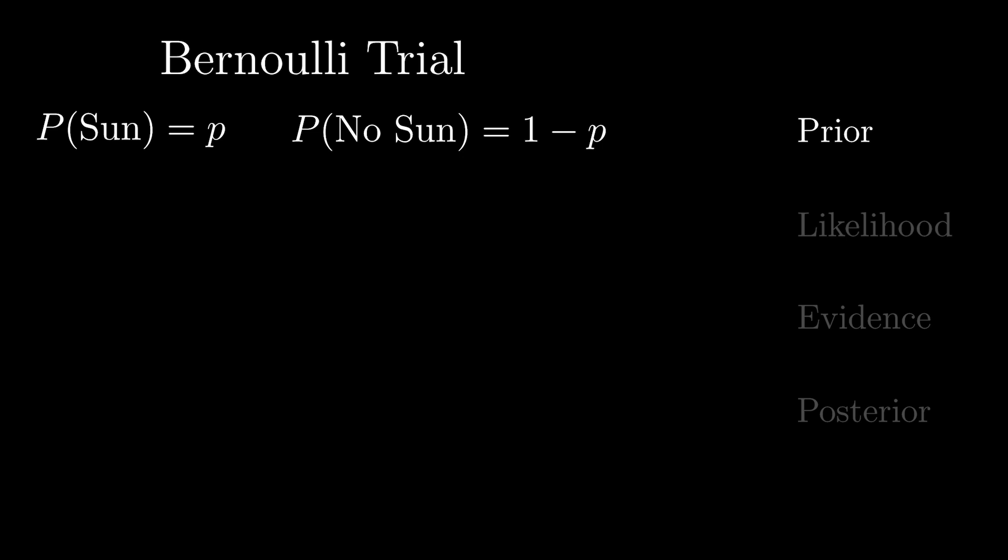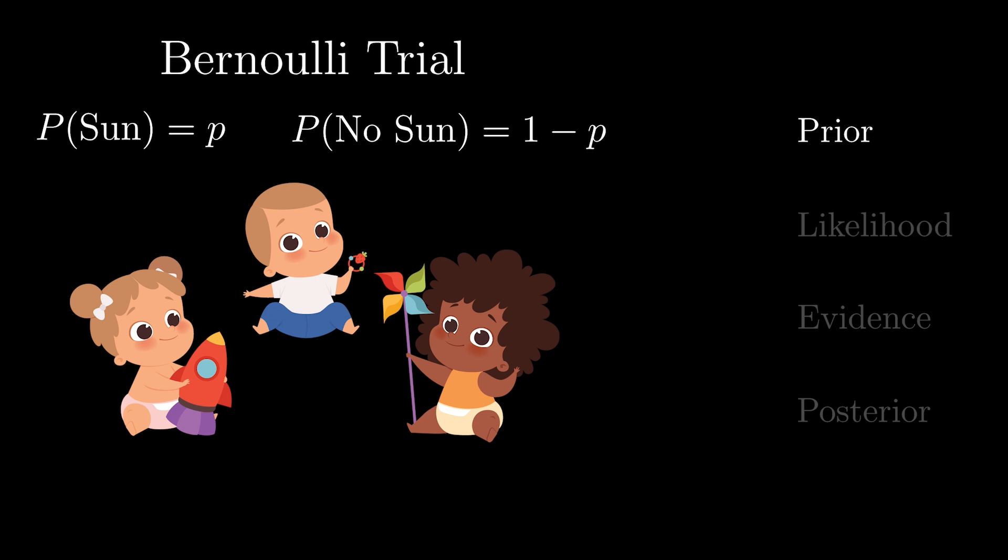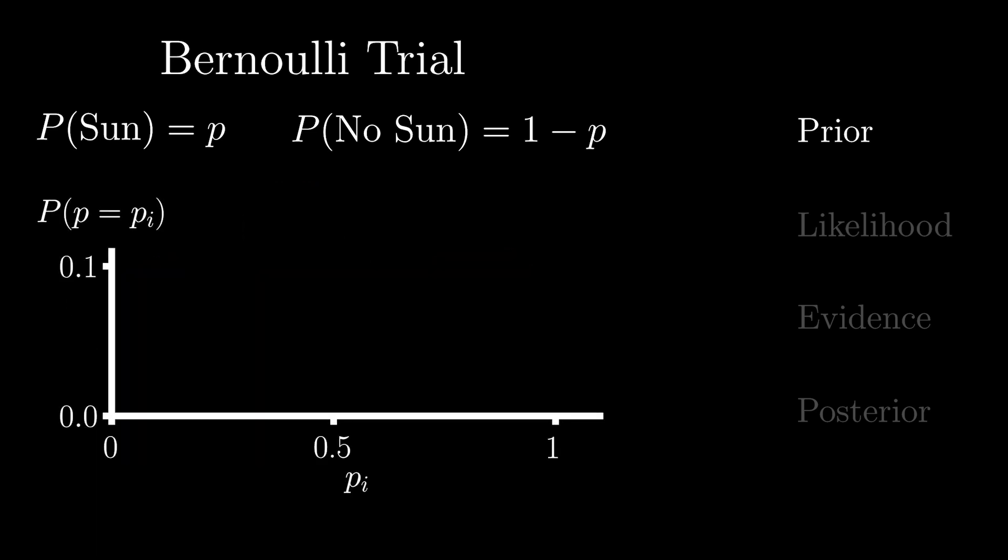Now, what is the right value of p? We'll assume that you've heard a rumor from other babies in the maternity ward that they've seen the sun before. Therefore, p should definitely not be 0.